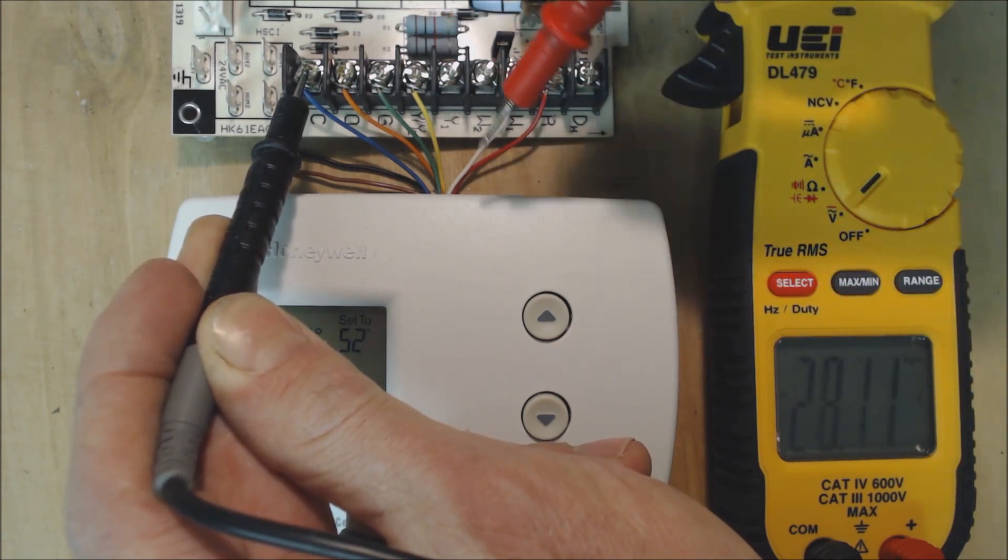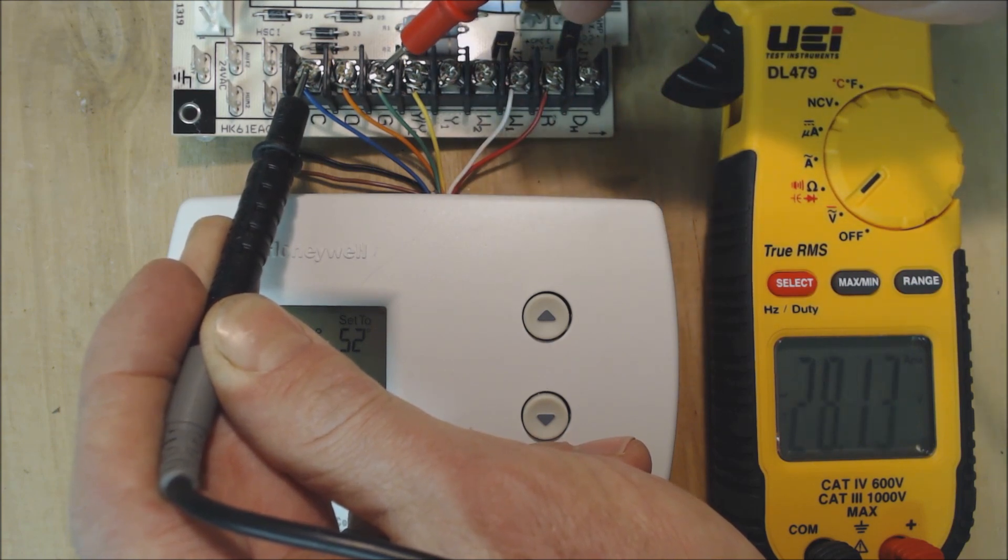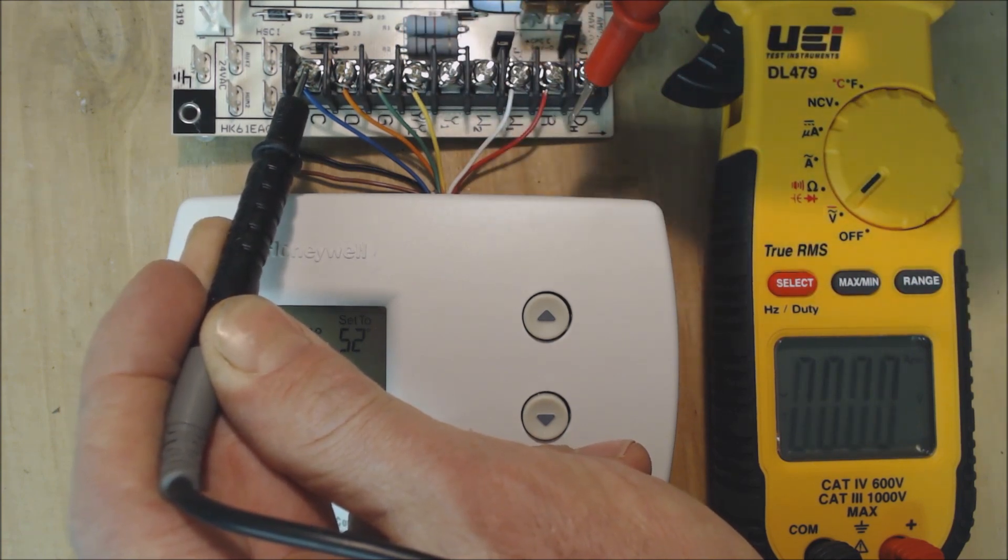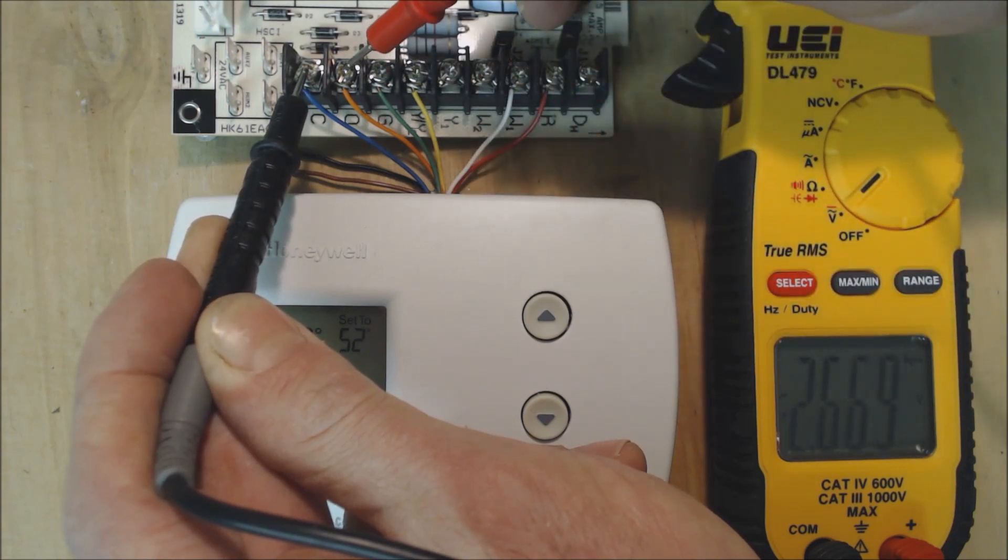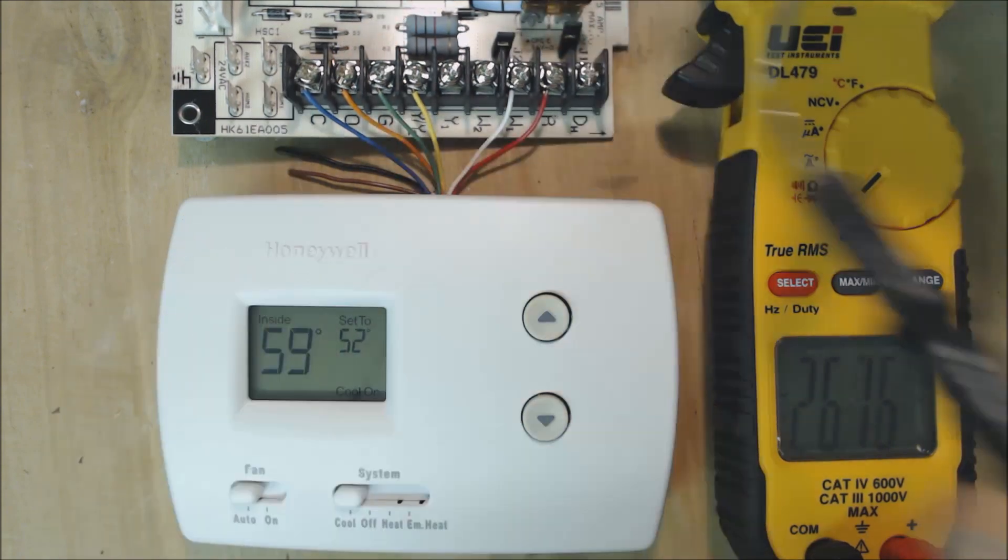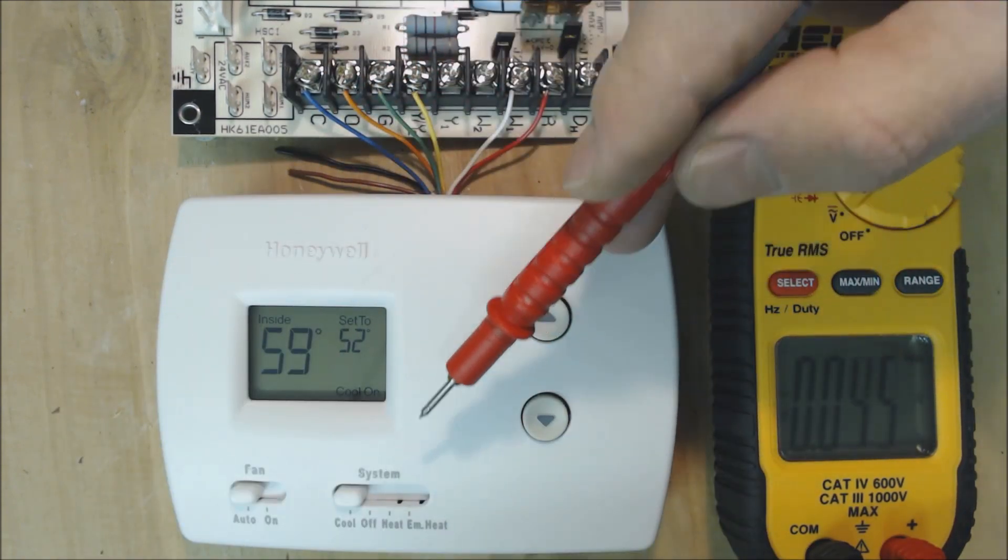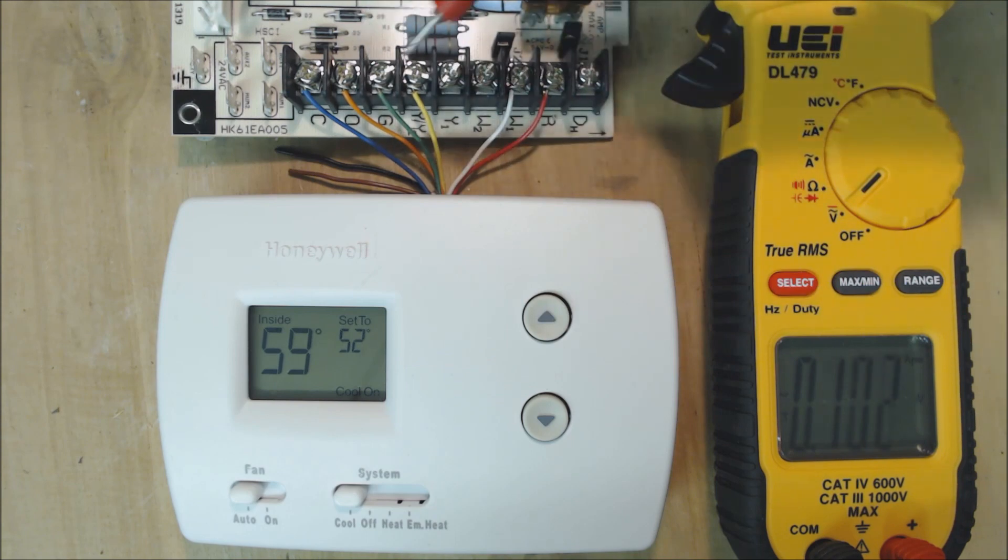We have power there. R is connected to G because it needs the fan, so you see it's powered there—28 volts. R is also powered to O, reversing valve, and you see that 24 volts. We know we're calling for cooling and the thermostat's operating correctly because we're sending power correctly.